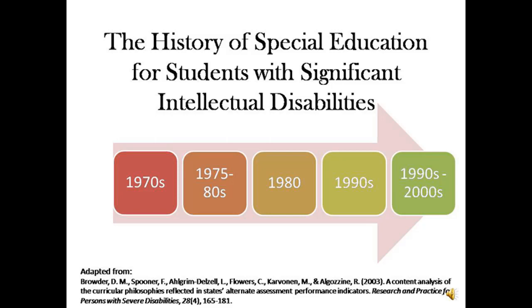The history of special education for students with significant intellectual disabilities has dramatically changed over the early 70s to current day. As part of preparing ourselves for instructional alignment, it's important to reflect and review each of these important time periods in special education. We need to determine what practices we have grown from and moved on, and the others that have built the field and still have important implications to the field.